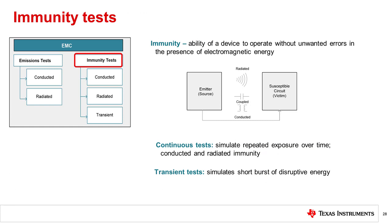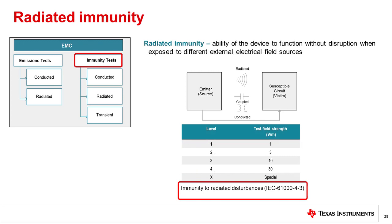Immunity is measured through continuous and transient tests. Continuous tests include conducted and radiated immunity, and simulate interference over a sustained period of time. Transient tests include EFT, ESD, and surge, which simulate shorter bursts of energy and disruption.